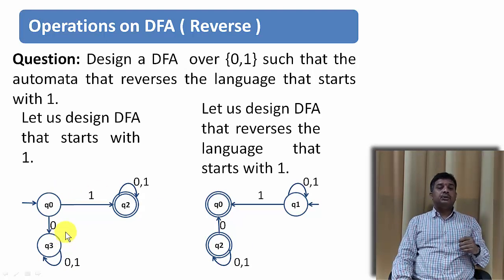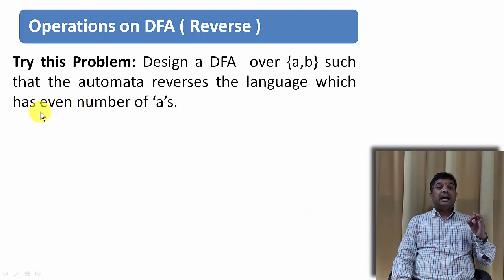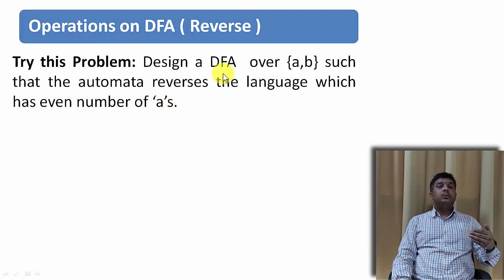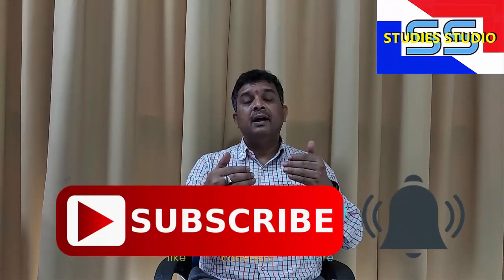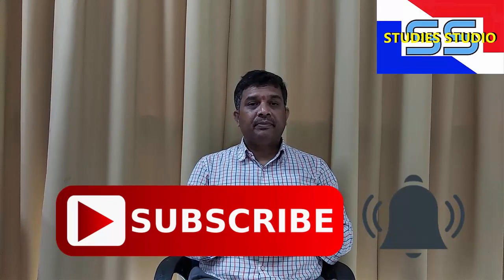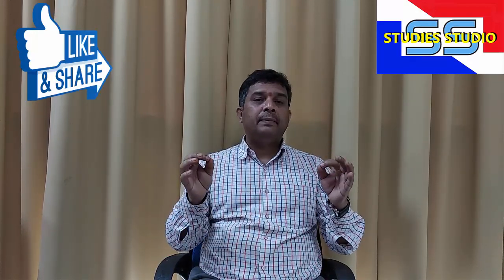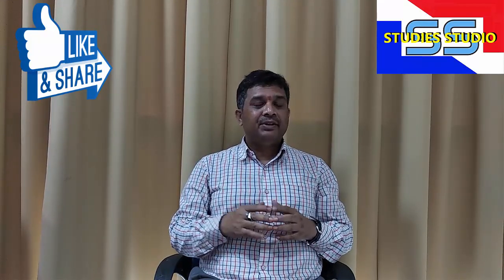I hope you understood. Try this problem: a string has even number of A's — find the DFA and then find the reversal of that language. In this video we have covered union, concatenation, complementation, and reverse operations. In our next video we are going to discuss cross product and the operations performed under it. If you have any problem, do comment and I will definitely reply. See you in the next video. Till then, take care. Bye.